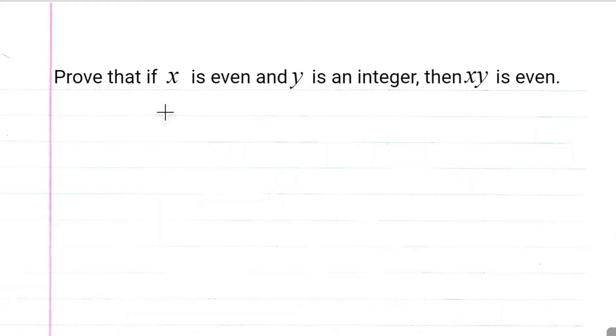We're going to prove that if x is even and y is an integer, then x times y is even. This basically says that if we have an even integer times any integer, then their product is going to be even.